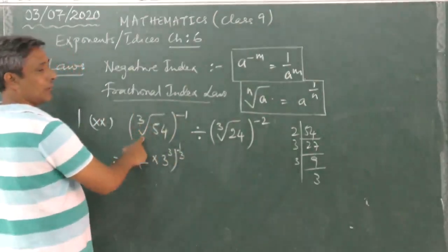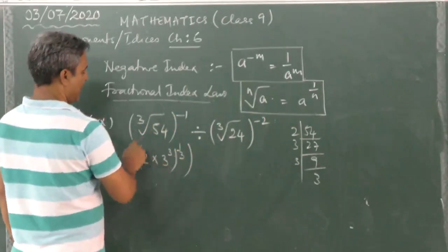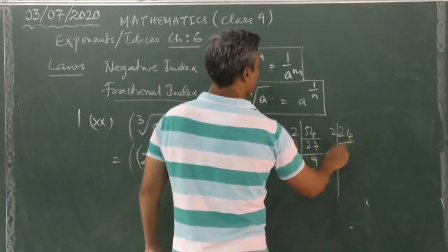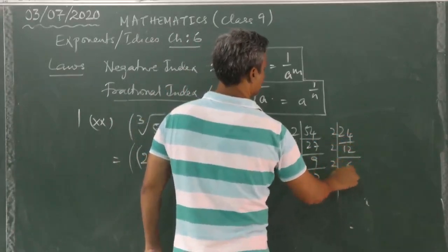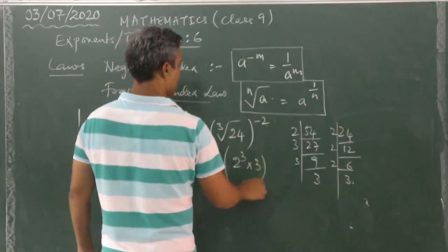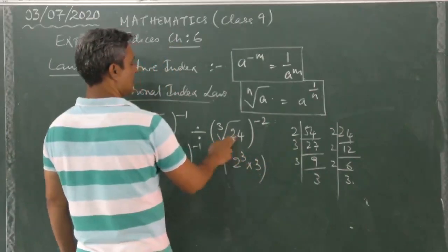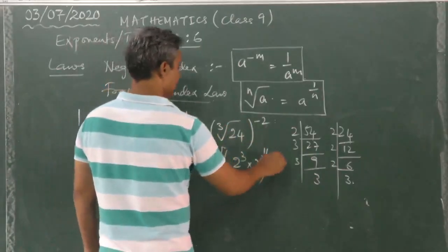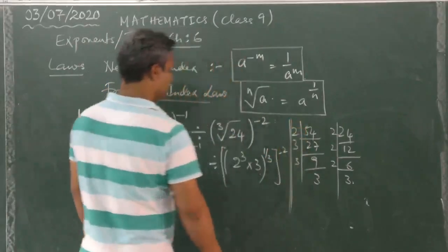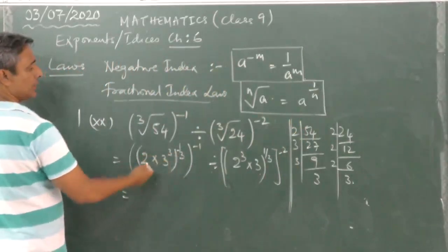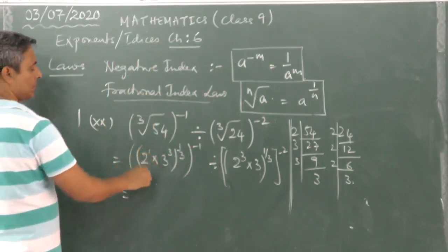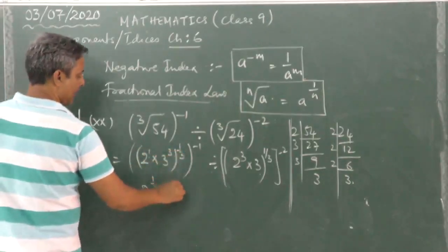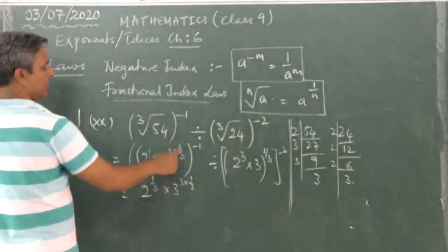Using the Fractional Index Law, the cube root is written as power 1 by 3, with the negative power kept outside. Similarly, breaking 24 into factors: 24 equals 2 to the power of 3 into 3. Now opening the brackets using Power Law: for the factor 2, the power becomes 1 into 1 by 3, giving 2 to the power of 1 by 3. For 3 to the power of 3, multiplying 3 by 1 by 3 gives 3 to the power of 1.